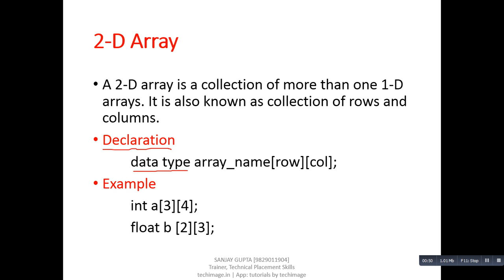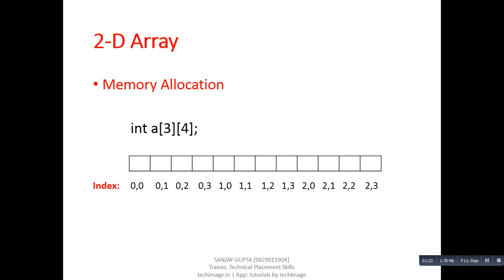Here is the declaration of a 2D array. First we write the data type, then the name of the 2D array. The first value will be the number of rows and the second value will be the number of columns. Here are two examples: first is a[3][4], which means total number of rows are 3 and each row will contain 4 elements. In the second example, number of rows are 2 and number of elements in each row is 3.